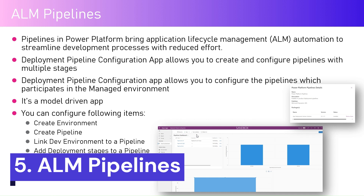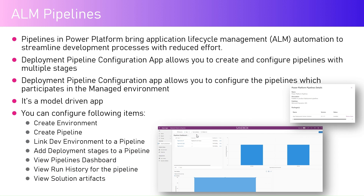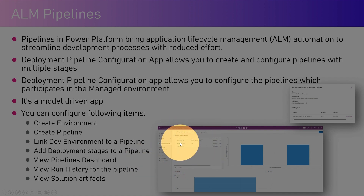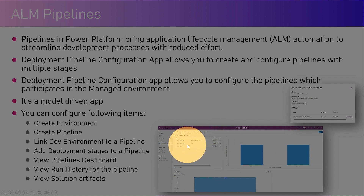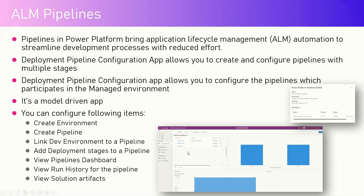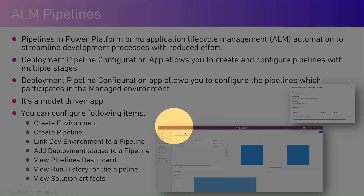ALM pipelines provide a platform to implement deployment pipelines so you can deploy solutions from dev to test to prod. There is an app called Deployment Pipeline Configuration that lets you configure user profiles, set up environments and pipelines, view run history and solution artifacts, and guide you through moving a solution from one environment to another. Environments can be defined as dev, test, UAT, prod, or whatever fits your organization's policy.